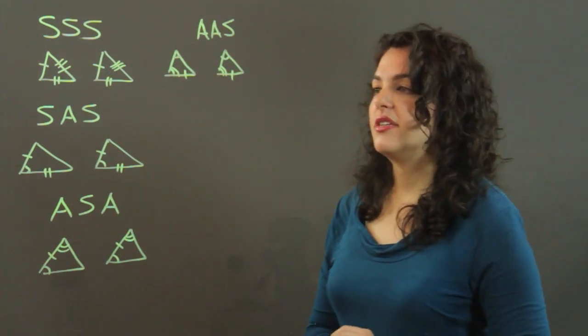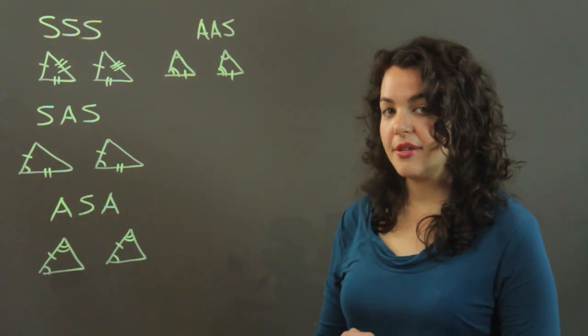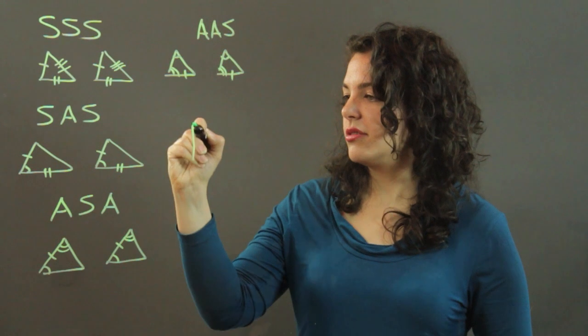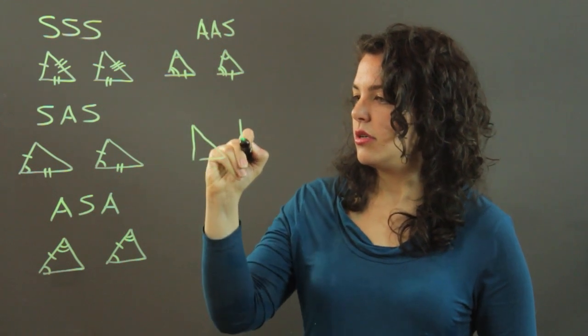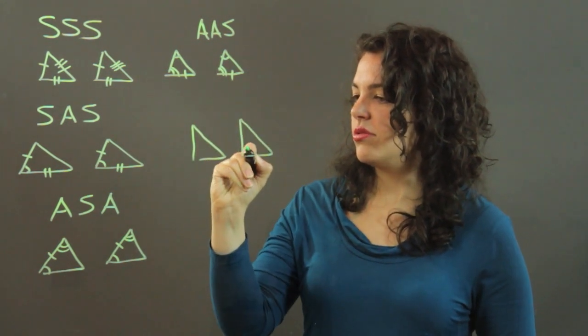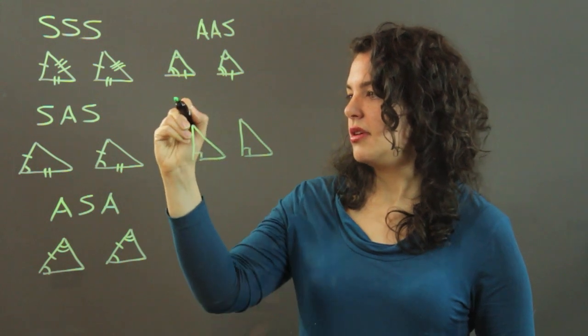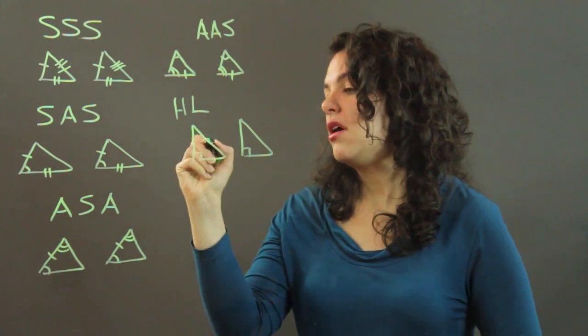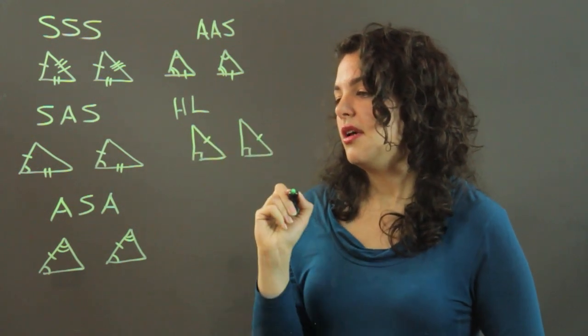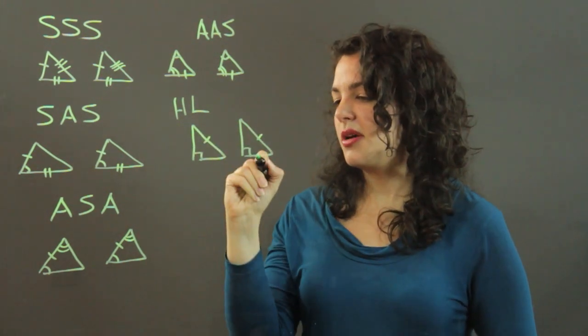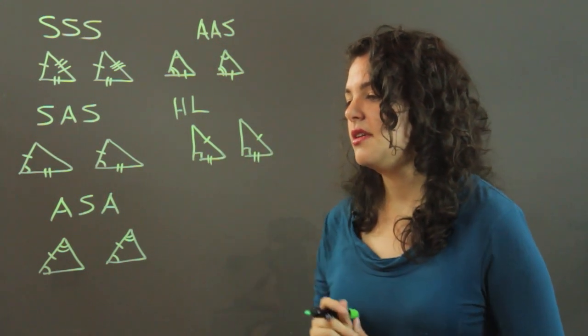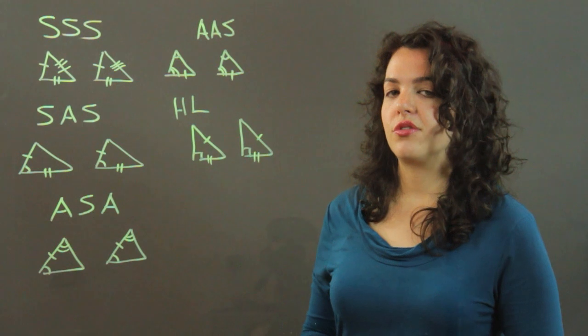And then the final one is called the hypotenuse-leg theorem. There's a hypotenuse, so it only applies to right triangles. So if you have two right triangles—remember that's hypotenuse-leg—and if their hypotenuses are congruent, and then they share one pair of corresponding congruent legs, I know that I have two congruent triangles.